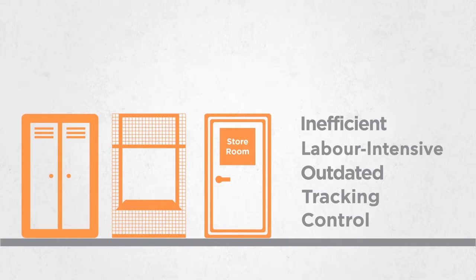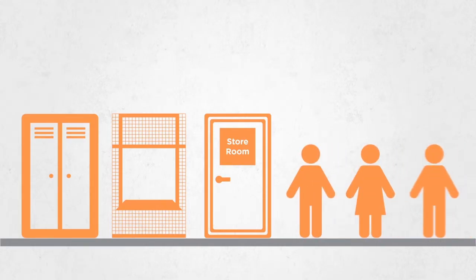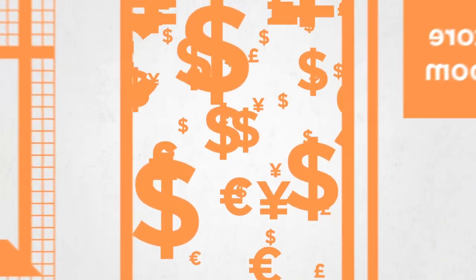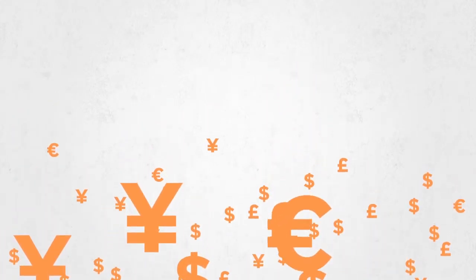Tracking and control is limited or non-existent. Stock-outs and emergency orders are common. Re-ordering is costly. Walking and waiting for supplies and parts further drains productivity. Way too much cash is tied up in excess inventory sitting in warehouses and back rooms, becoming obsolete.